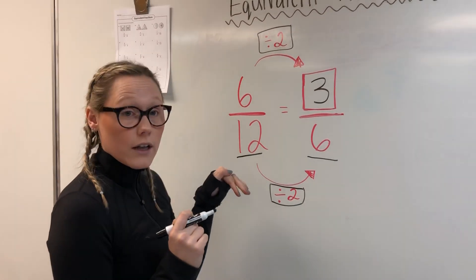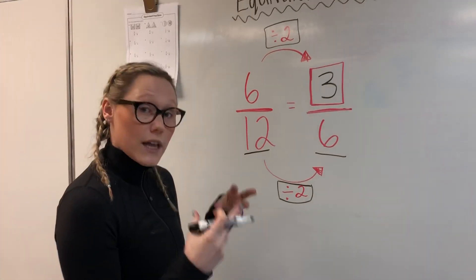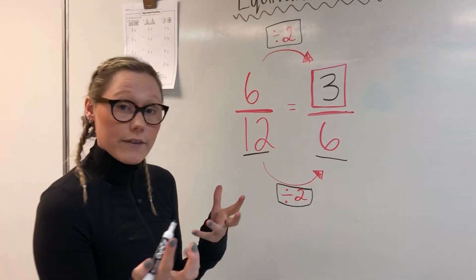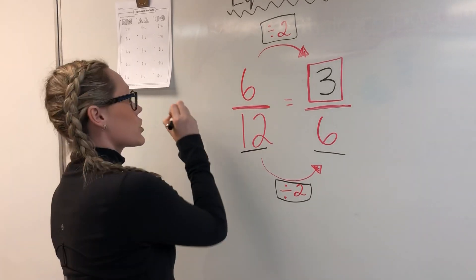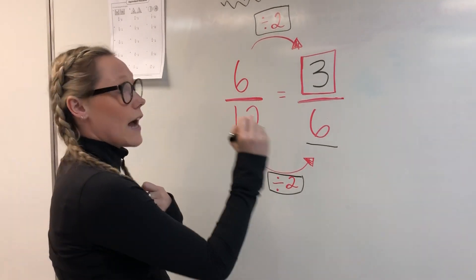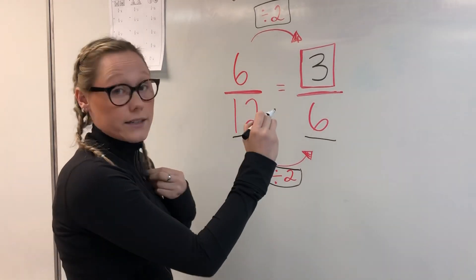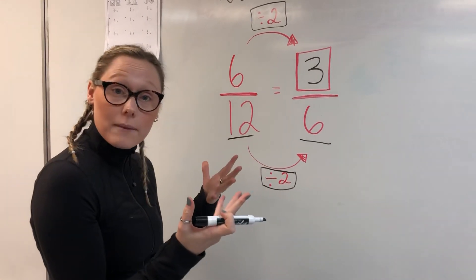If you're having trouble without the visualization, then you can draw them out. You'll draw the circle, divide it by 12, shade in 6 parts, and then that will help you see it if you need to do that.